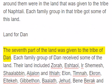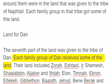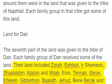Land for Dan. The seventh part of the land was given to the tribe of Dan. Each family group of Dan received some of the land. Their land included Zorah, Eshtotl, I-R-Shemesh, Shalabin, Ijalan and Ithla, Elan, and Timna.